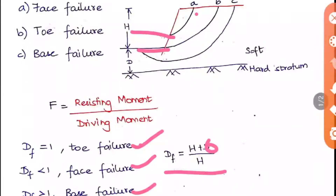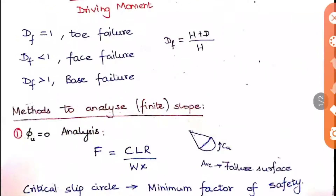From the depth factor you can identify the failure type. Factor of safety here is given as resisting moment divided by driving moment. Now comes the methods to analyze the finite slope. In previous formulas we dealt with infinite slope; now we do finite slope. Similar to how Rankine's theory and Coulomb's theory were used for earth pressure analysis, here there are five theories used for analyzing slope structures.